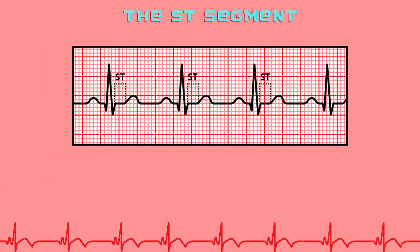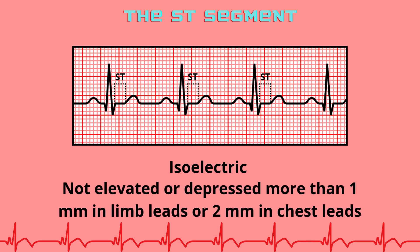The ST-segment connects the end of the QRS-complex with the beginning of the T-wave. It represents the plateau phase of ventricular repolarization. It should be isoelectric — not elevated or depressed more than 1 mm in limb leads or 2 mm in chest leads. Deviations from the baseline may indicate ischemia, injury, or pericarditis.